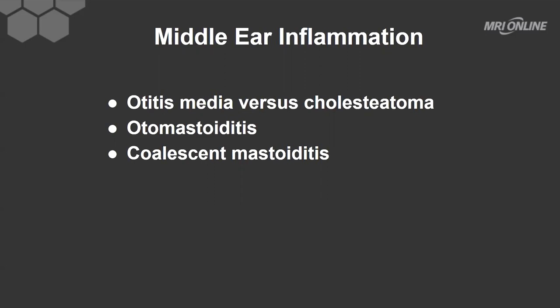When the middle ear inflammation extends to the mastoid air cells, it's termed otomastoiditis. If the mastoid air cells start to have irregularity and destruction of the septi between the various mastoid air cells, we call that coalescent mastoiditis, and we treat it as if it is a form of osteomyelitis, often requiring aggressive antibiotic use,